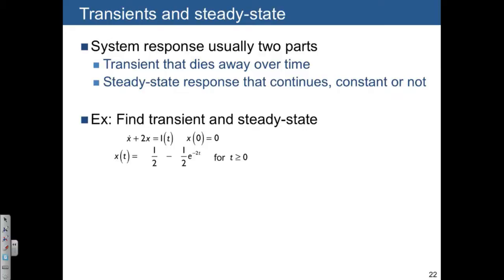Here's an example. Here's a system: x dot plus 2x equals one of t, x of zero equals zero. We follow our usual steps and we find this response. And there's one part that is constant, it's never going to go away. And then the other part is going to eventually die out with an exponential shape. So the first part we'll call steady state, and the second part we'll call the transient.